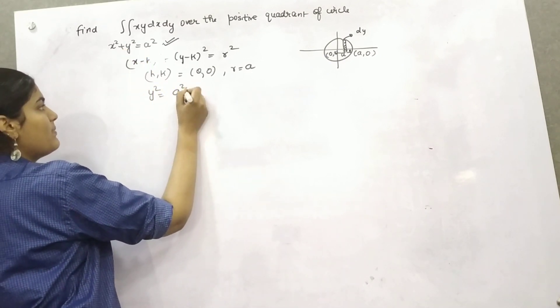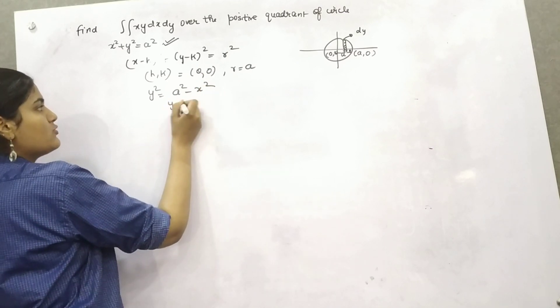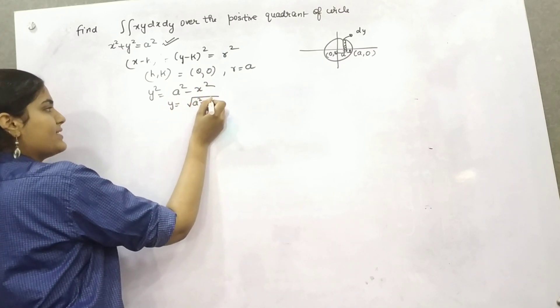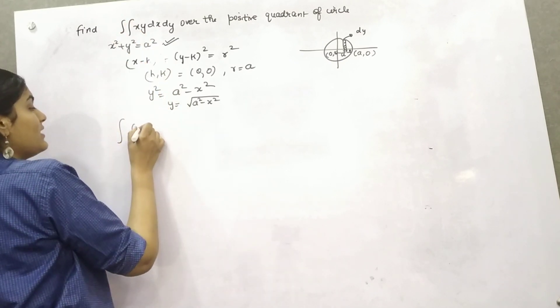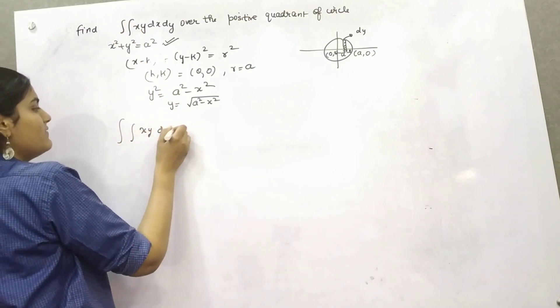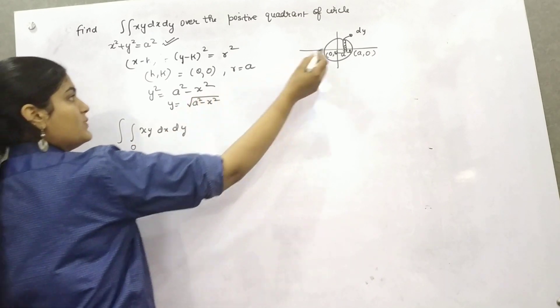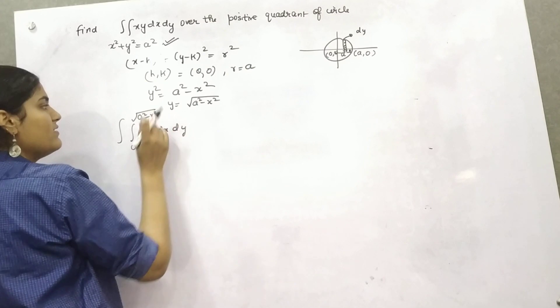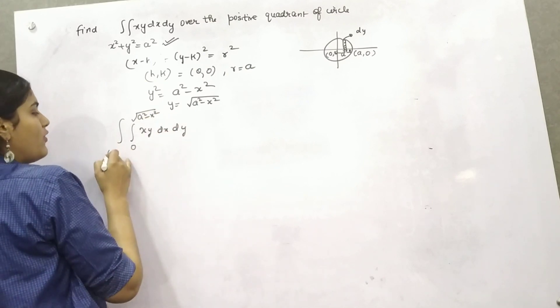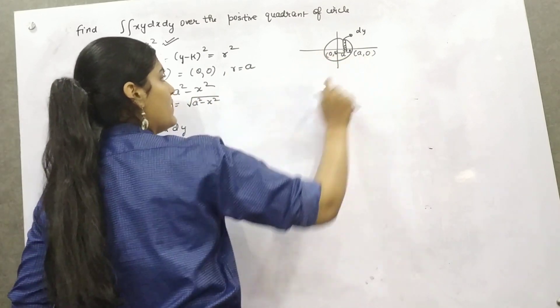So y square will be a square minus x square, so it will be root (a square minus x square). Now to calculate this x, y, dx, dy, when limit is given from 0 to root (a square minus x square) for dy and for x, it is from 0 to a.